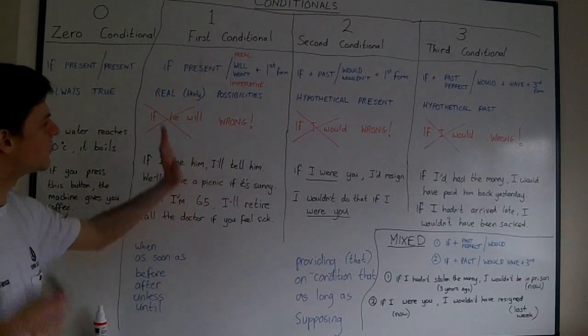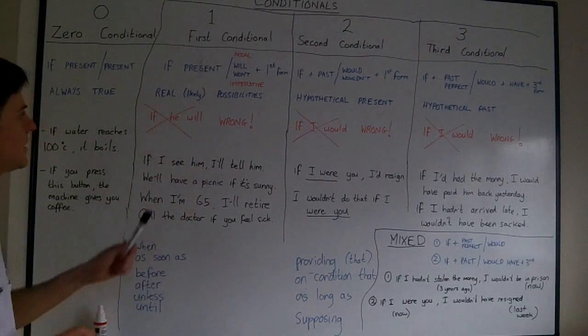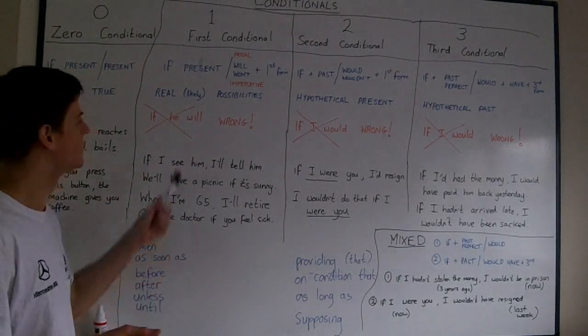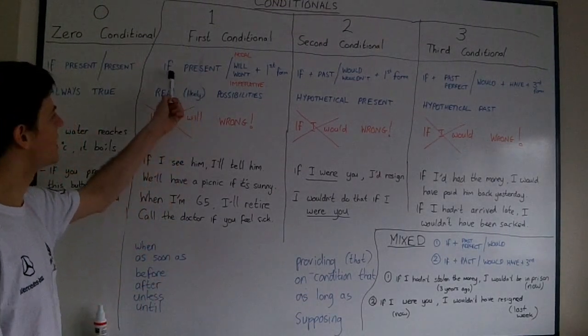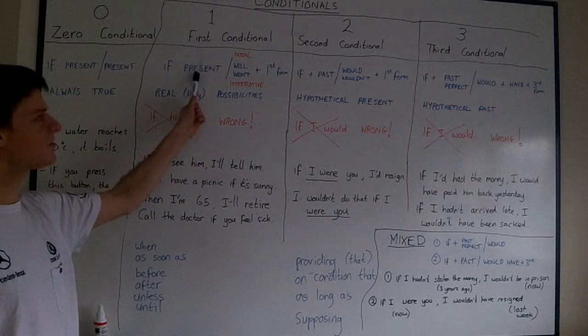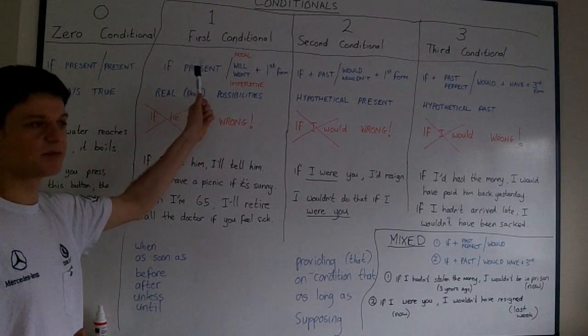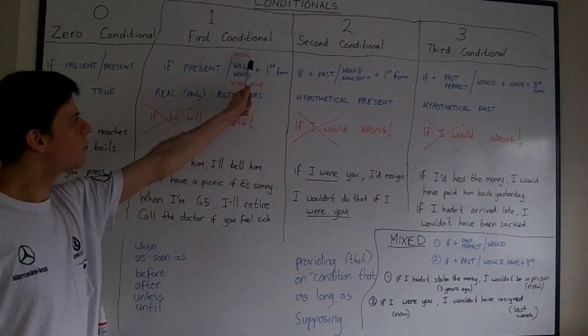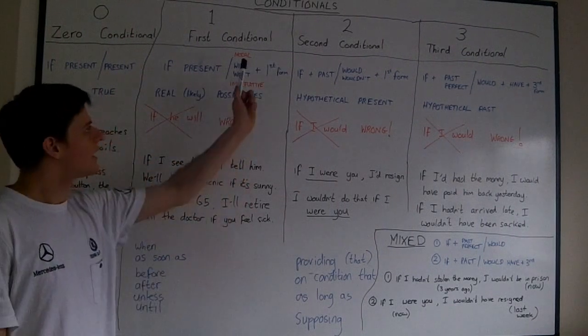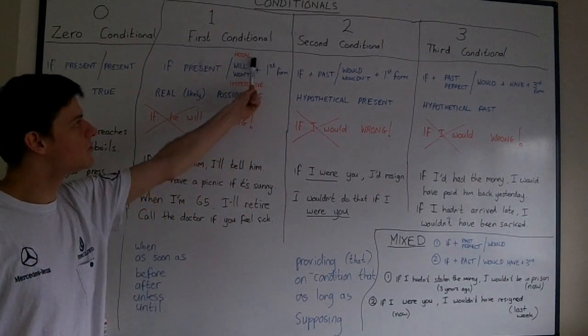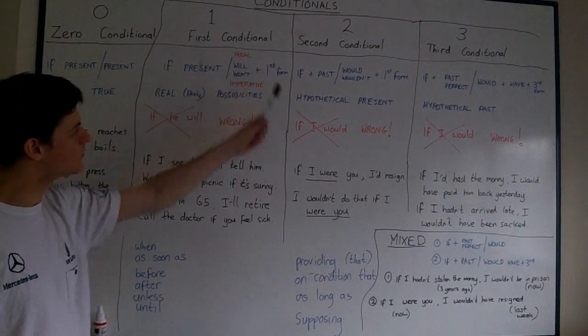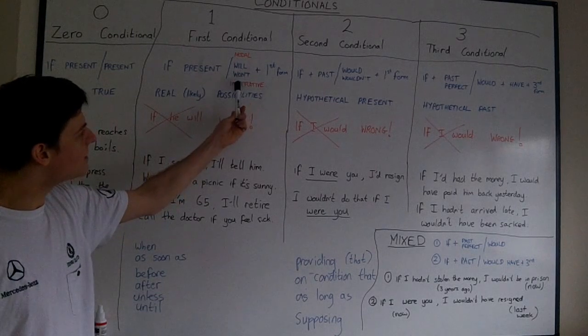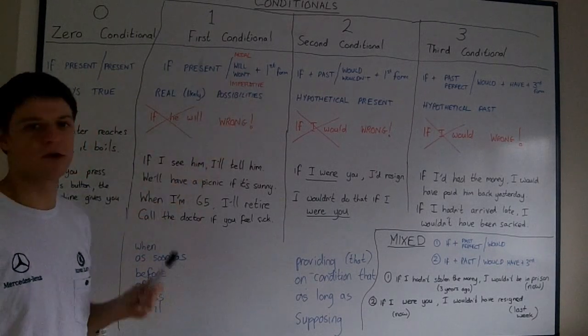First conditional refers to one possibility in the future, and it is a real possibility. What I mean by real is it's likely to happen. It follows the formula: if and present tense, any present tense by the way - present simple, present continuous, or present perfect - and will or won't plus the first form. However, we can use a modal verb here instead of will or won't, that's why I've written modal. Can, might, may, should.